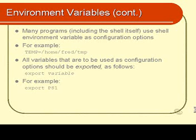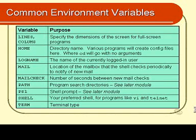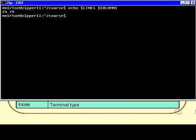I'll now show you a few common environment variables that you might find being used on a regular basis in your shell and other programs. LINES and COLUMNS are two environment variables that contain the number of lines and the number of columns on your current terminal. Echoing both of those values, I have 24 lines and 79 columns.